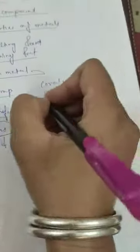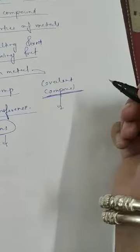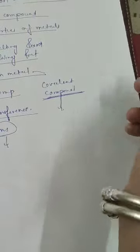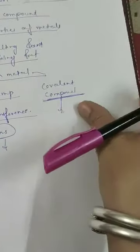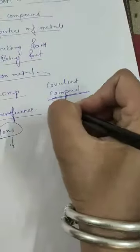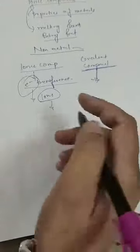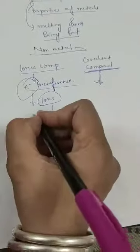Now, how are covalent compounds formed? In this chapter, we will discuss how covalent compounds form, and we have to study that carbon forms covalent compounds.